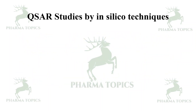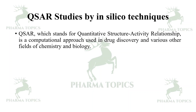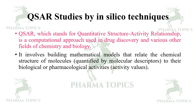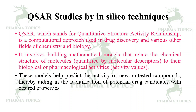QSAR, which stands for quantitative structure-activity relationship, is a computational approach used in drug discovery and various fields of chemistry and biology. It involves building mathematical models that relate the chemical structure of molecules — quantified by molecular descriptors like ClogP, logP, logS, or number of hydrogen bond donors — to their biological or pharmacological activities using activity values. These models help predict the activity of new untested compounds, aiding the identification of potential drug candidates with desired properties.